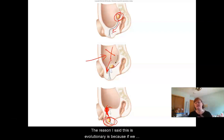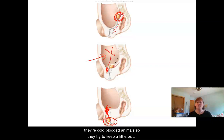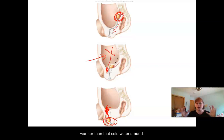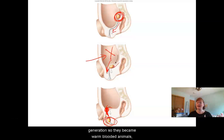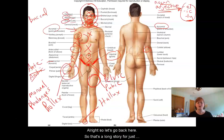Now the reason I said this is evolutionary is because if we look back at fish — fish are cold-blooded. They keep their testes kind of within or just behind the abdominal cavity to keep them warm enough. But as soon as animals developed internal body heat generation and became warm-blooded, then these were too hot, so they have to pass out in order to stay cooler. So that's a long story for just learning inguinal.